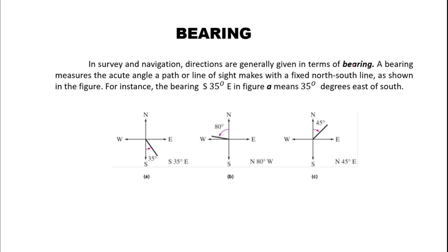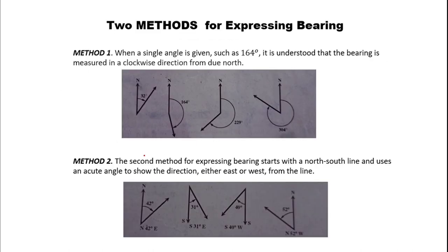As shown in the figure, for instance, we have the bearing of south 35 degrees east. This means 35 degrees east of south. So take note that bearing starts with a fixed north-south line — the bearing should start at north or south, and it could be east or west. That is the illustration about bearing.